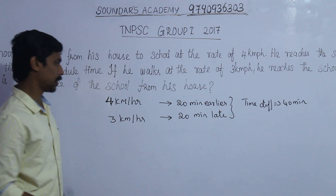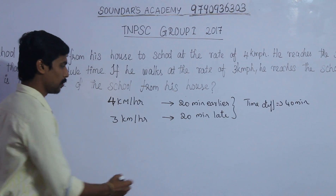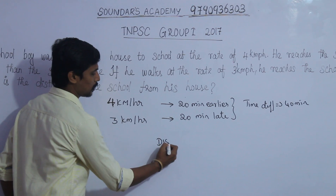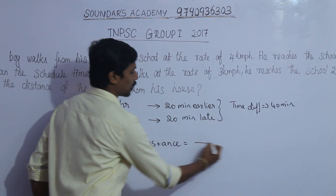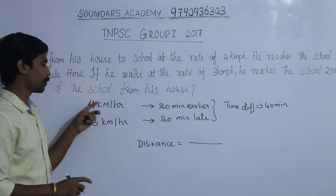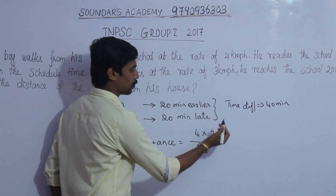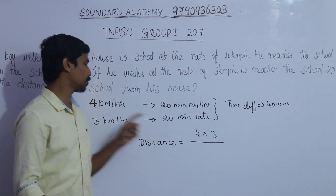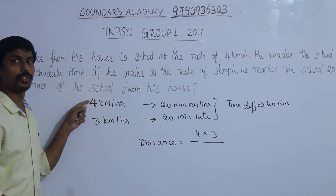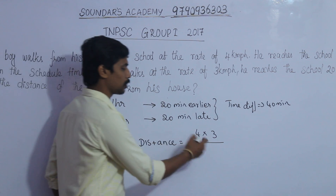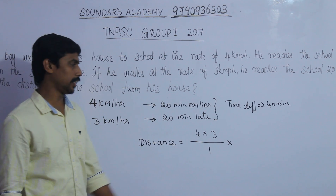Using the time difference, we can find the distance. Distance is equal to the product of the speeds in the numerator — 4 into 3 — divided by the difference between the speeds in the denominator — which is 1 — multiplied by the given time difference.